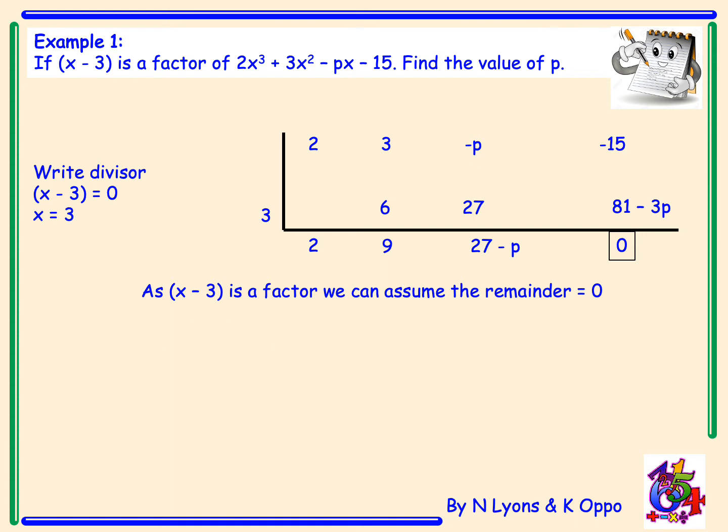We then have negative 15 plus 81 minus 3p is equal to 0. Simplifying to 66 minus 3p equals 0. Change the sign and change the sign of your negative 3p to get 66 is equal to 3p, giving the final answer of p is equal to 22.